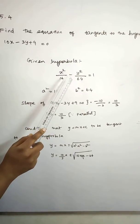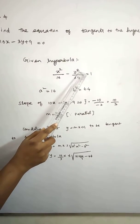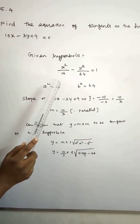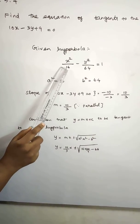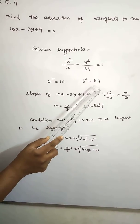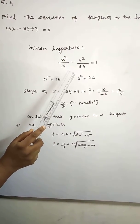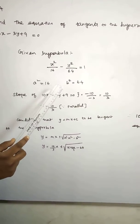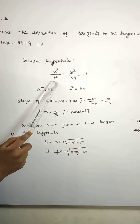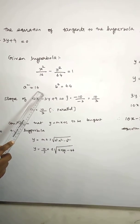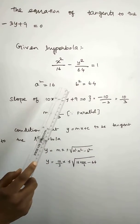So first, given hyperbola x² by 16 minus y² by 64 equal to 1. For hyperbola, first is a², second is b². So a² equal to 16, b² equal to 64.